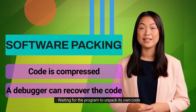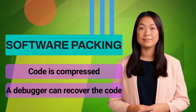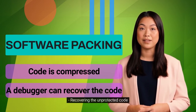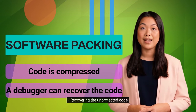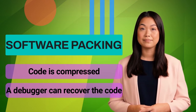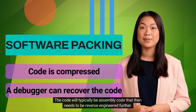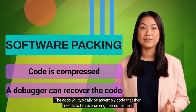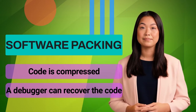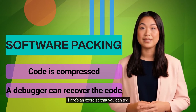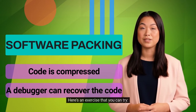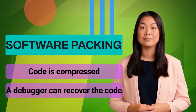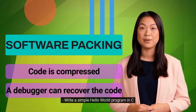You then wait for the program to unpack its own code and recover the unprotected code. The code will typically be assembly code that then needs to be reverse engineered further. Here's an exercise that you can try: write a simple Hello World program in C.